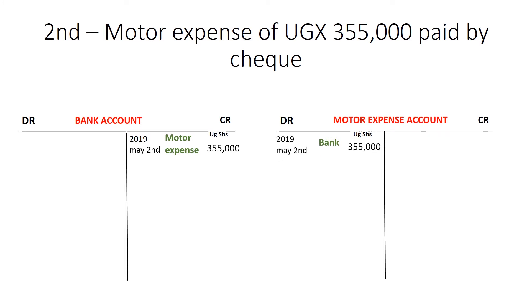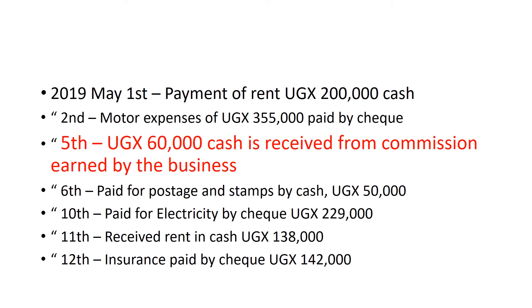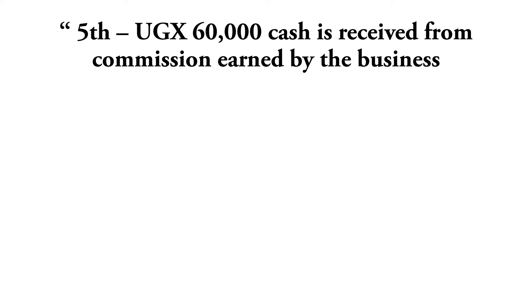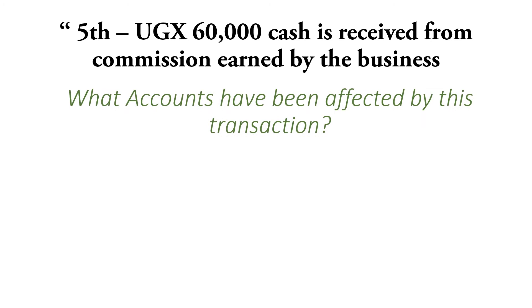Take note that increases in expenses are debited and increases in revenue are credited. We were able to explain why it is so in our previous session. In our next transaction, on the 5th, 60,000 Uganda shillings is received from commission earned by the business. This is revenue coming in for the business. When the business receives this 60,000 cash, we have more money, so cash increases. The commission revenue account has also increased.